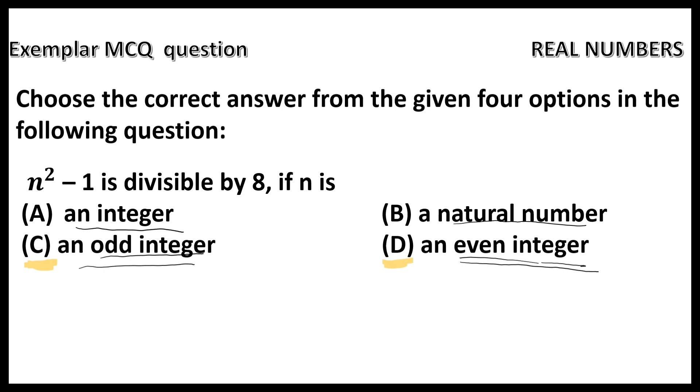Now let us check option C. You know that odd integer, the examples for odd integers are minus 1, 1, 3, minus 3, 5, minus 5, etc. Now let us check n square minus 1 is divisible by 8 or not.